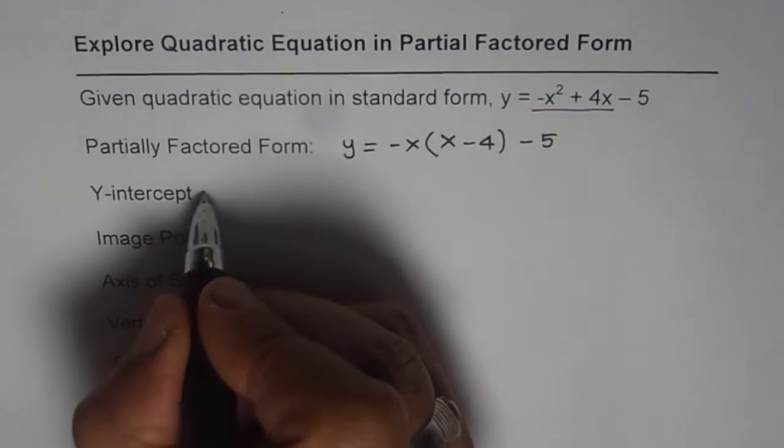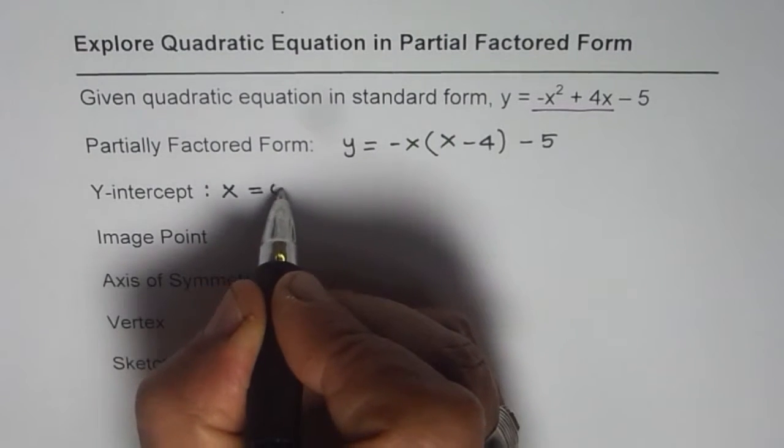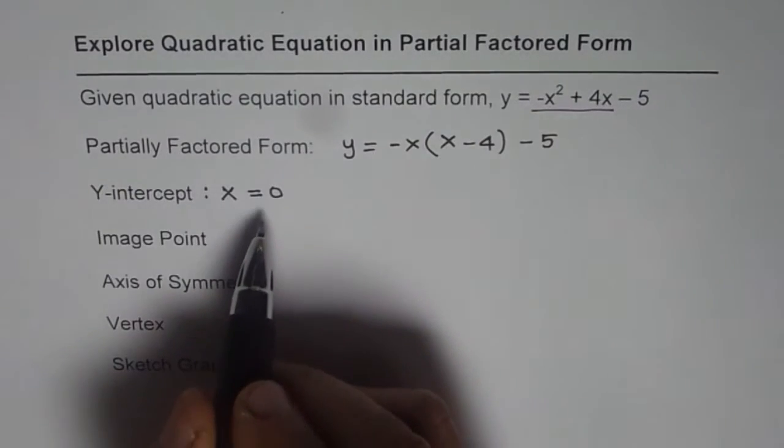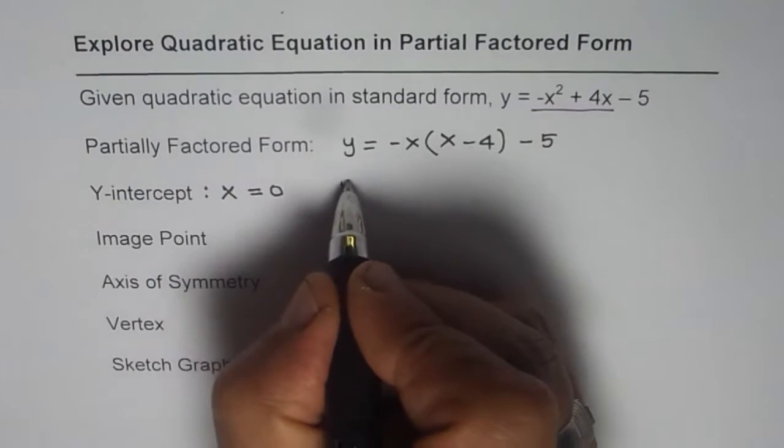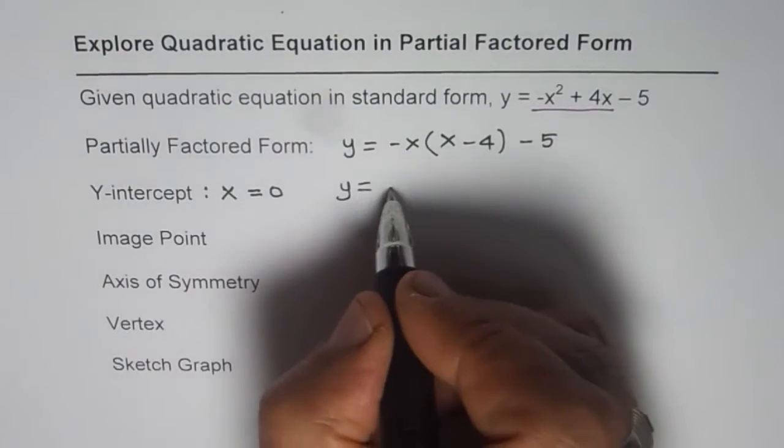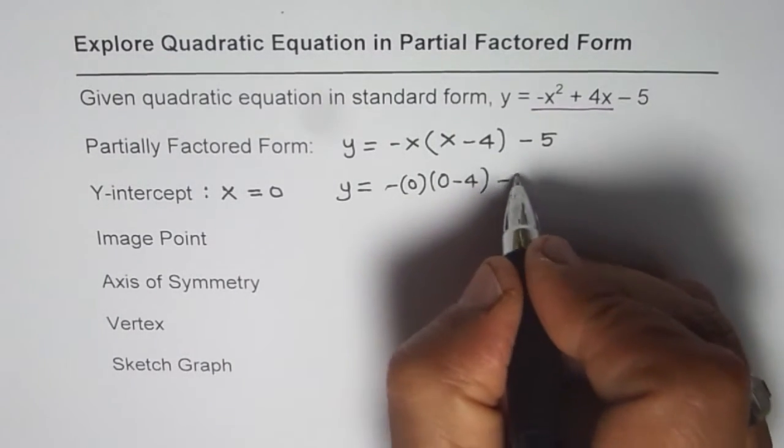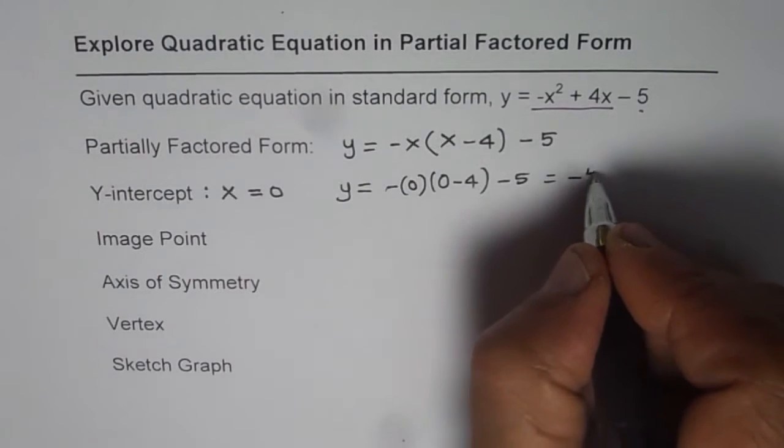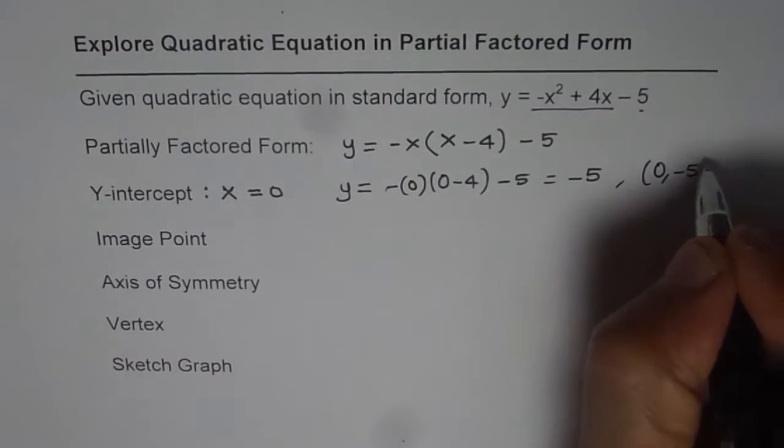Now y-intercept. Y-intercept is value of the function when x is 0. At that point, the graph crosses y-axis. Therefore, it is y-intercept. So if I substitute x as 0, what do I get? I get y equals minus, this is 0, times 0 minus 4 minus 5. So we get this term, which is the y-intercept, minus 5. So the y-intercept is at 0 minus 5.